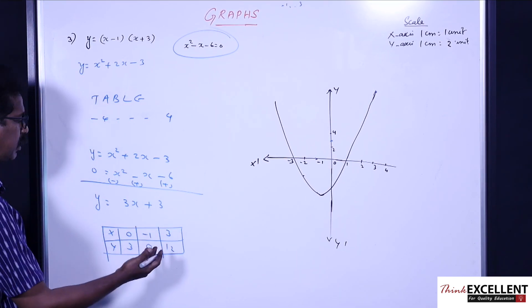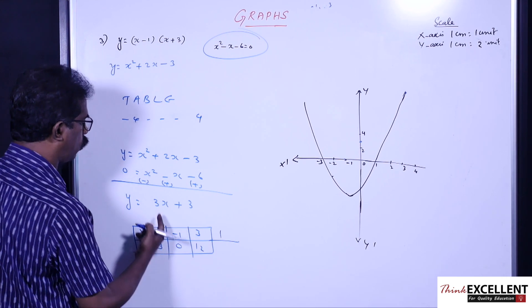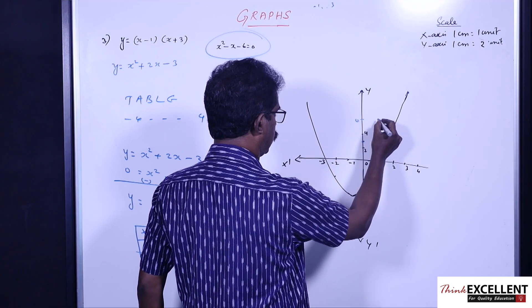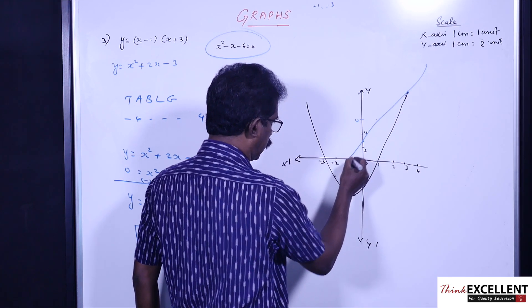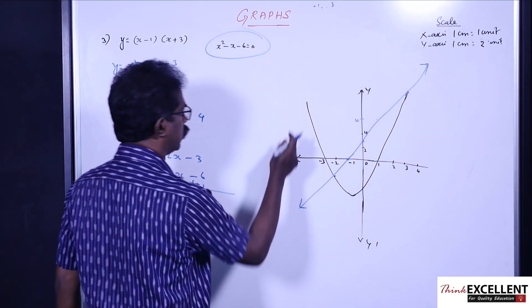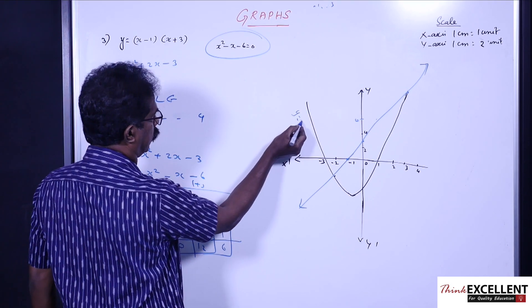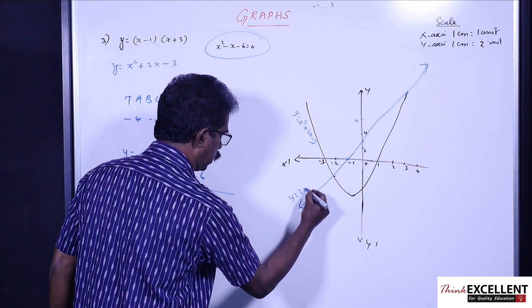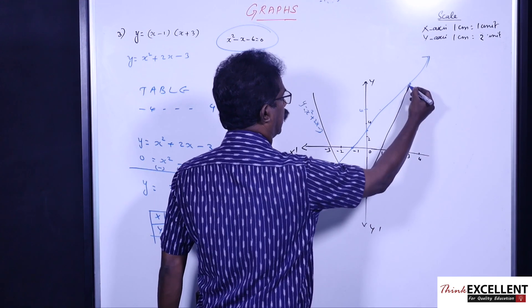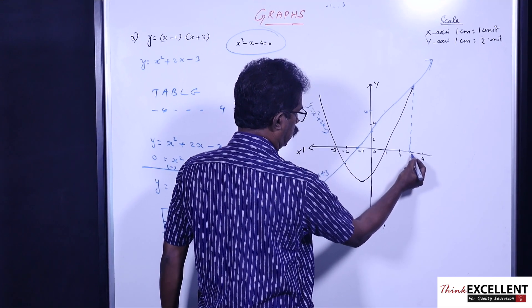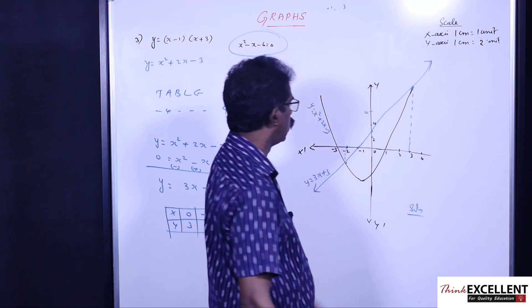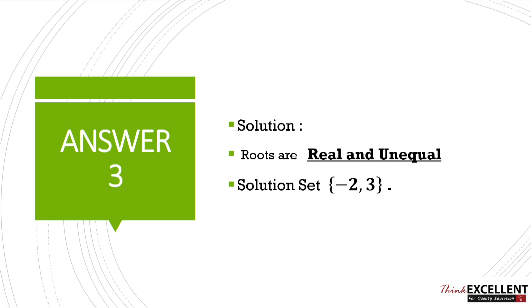Take a few points: (0, 3), (-1, 0), and (1, 6). Join them to get the line y = 3x + 3. This line cuts the curve at two places. The curve is y = x² + 2x - 3 and the line is y = 3x + 3. From the two intersection points, draw perpendicular lines to the x-axis. They cut at x = -2 and x = 3. So the solution is x = -2 and x = 3, and the solution set is {-2, 3}. The roots are real and unequal.